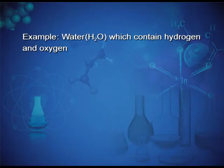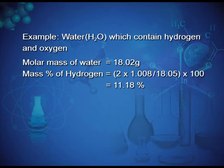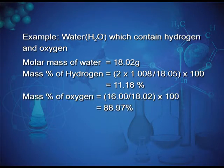For example, water (H₂O) contains hydrogen and oxygen. The molar mass of water is 18.02 g. Mass percentage of hydrogen = (2 × 1.008 ÷ 18.02) × 100 = 11.18%. Mass percentage of oxygen = (16.00 ÷ 18.02) × 100 = 88.97%.